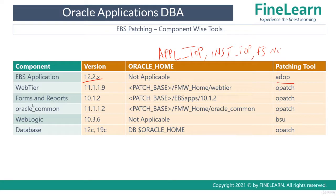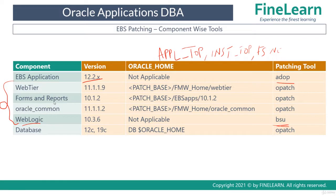The next component is Fusion Middleware. The four components — web tier, forms and reports, Oracle Common, and WebLogic — are all part of Fusion Middleware. These Fusion Middleware components should be patched using either OPatch or BSU. For WebLogic, if you want to apply the latest patch set update or quarterly updates, you use the BSU utility. BSU is only applicable for WebLogic. The remaining three — web tier, forms and reports, and Oracle Common — are Oracle Homes located in FS1 or FS2, which is the patch file system. You should always apply these patches on the patch file system, not the run file system.